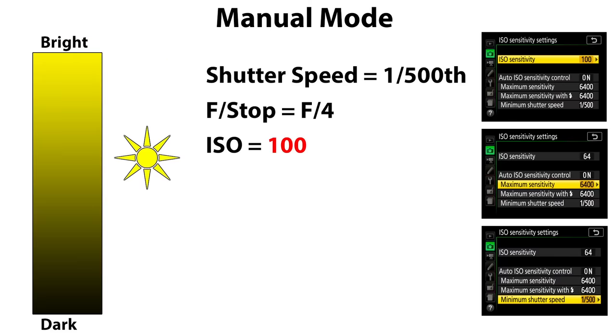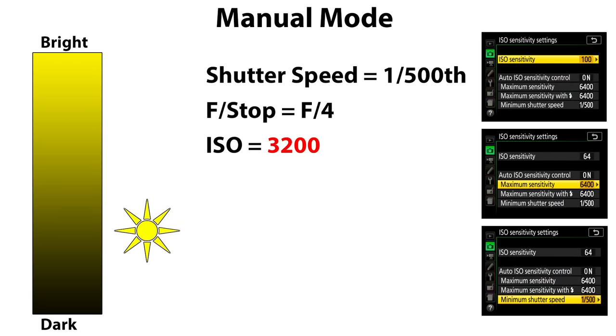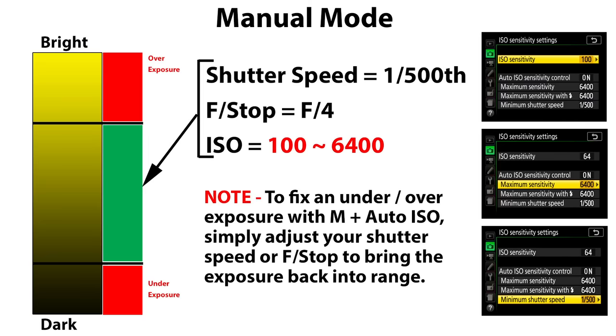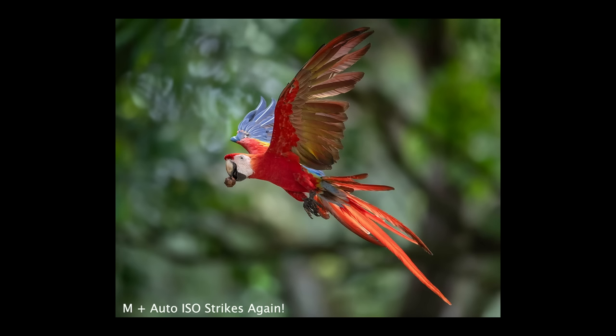Finally we have manual plus Auto ISO, and this one is a little different. The camera only controls ISO — it has no control over shutter speed or f-stop since you're setting those yourself. The camera will float the ISO to give you a proper level of brightness at the shutter speed and f-stop you select. As long as the brightness of the scene falls between your base ISO and your max ISO setting you're good to go. If it falls outside of that range the camera will either over or underexpose since it can't take control of any other setting. There's a lot more to manual plus Auto ISO and I have a complete video that talks all about it — it's my favorite auto exposure mode and the only one I use for wildlife.